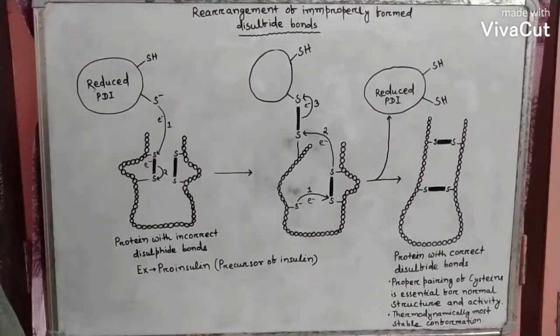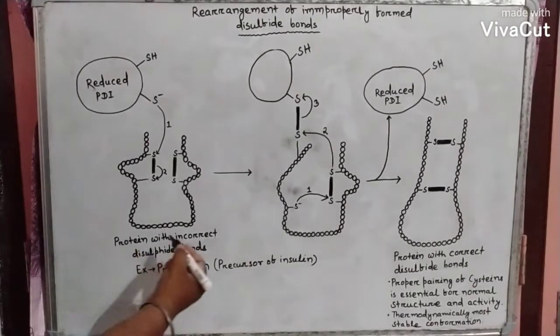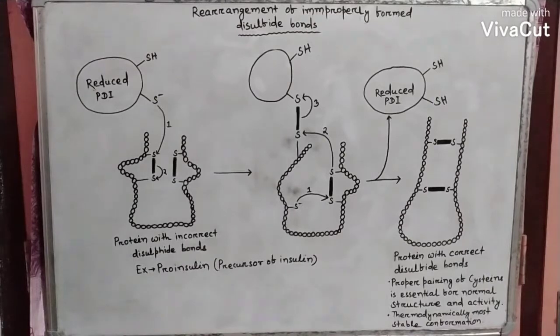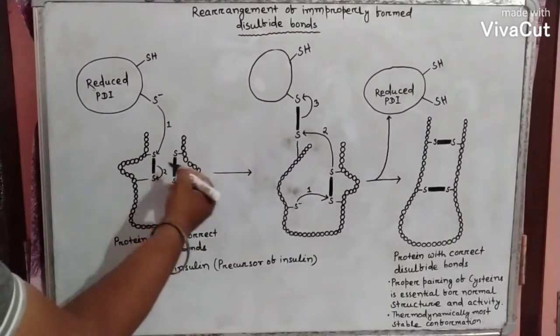Now, let us discuss the rearrangement of improperly formed disulfide bonds. This is the protein with incorrect disulfide bonds. These are the disulfide bonds.